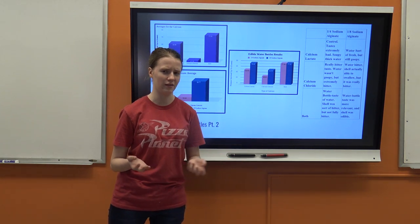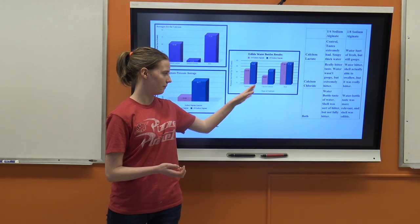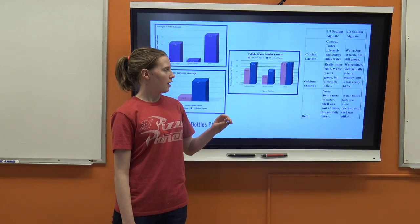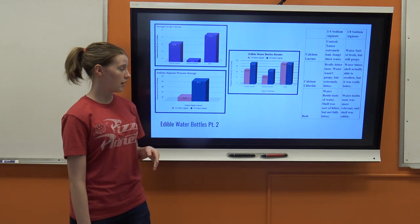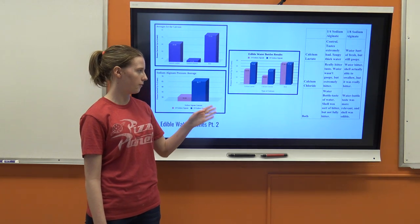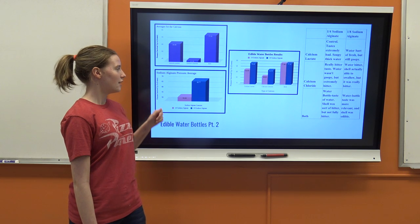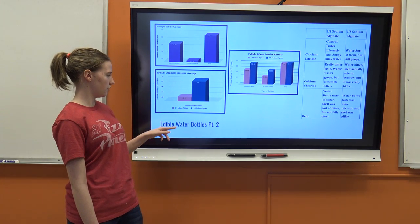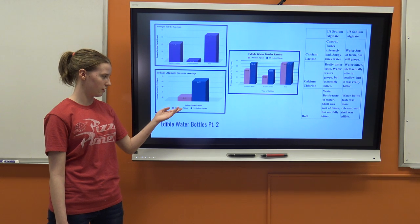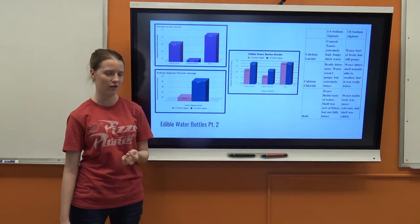However, both did much better than calcium separate. My hypothesis was that the 1/4 sodium alginate would do better than the 1/8. However, what happened was the sodium alginate with 1/4 was worse than the 1/8 sodium alginate.